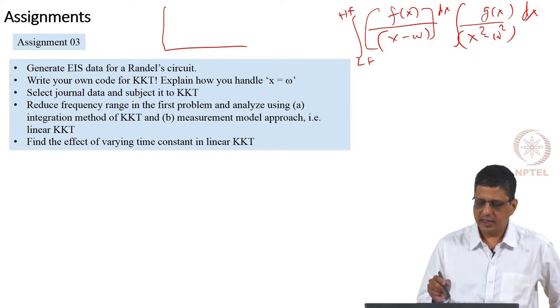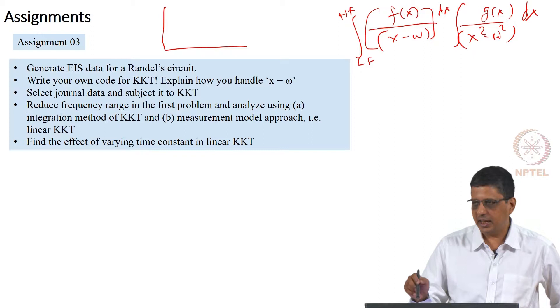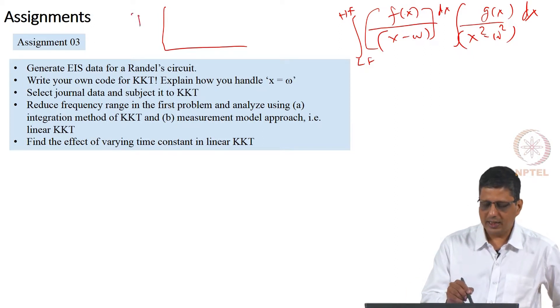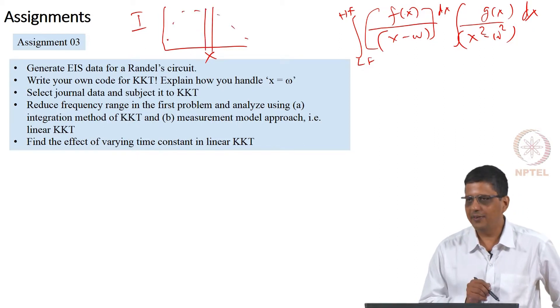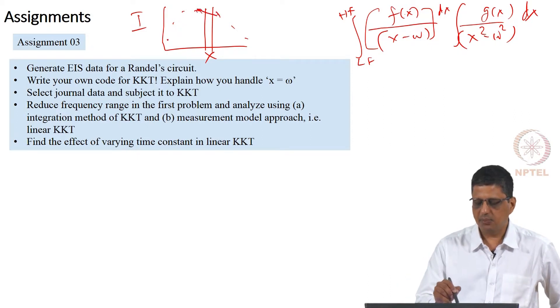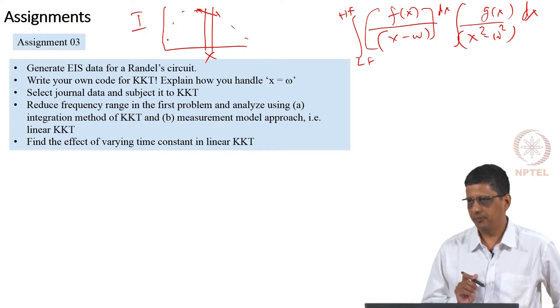We do not know the function. We get impedance data but given each data, you can calculate the integrand at those values. So if you calculate the integrand as a function of x, it will go like this. At one point, you are going to have x equal to omega. You cannot calculate it but you can use interpolation. That is the crudest or simplest way.